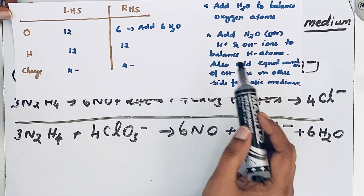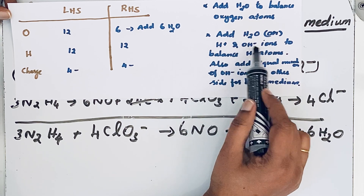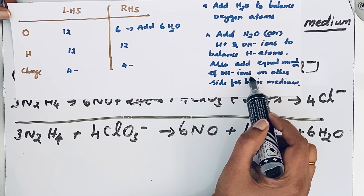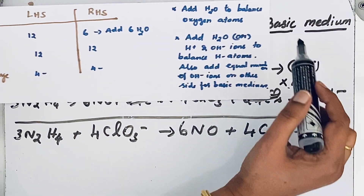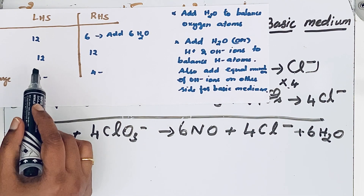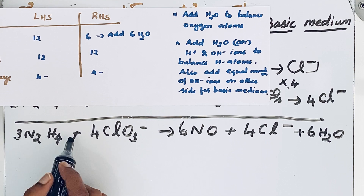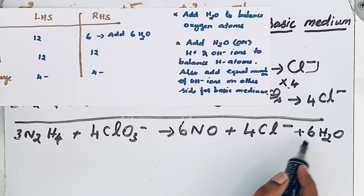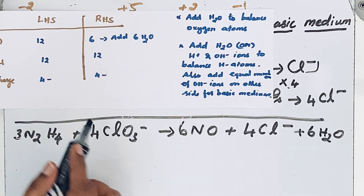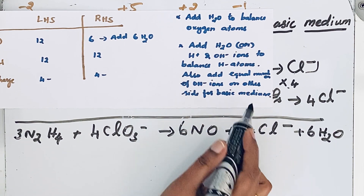Now balance the hydrogen atoms. To balance hydrogen atoms, add H2O or H plus and OH minus ions, and add equal numbers of OH minus ions on the other side for basic medium. On the left hand side: 3×4 = 12 hydrogen atoms. On the right hand side: 6×2 = 12 hydrogen atoms from the 6 H2O molecules. So the hydrogen atoms are automatically balanced, and we do not need to add any OH minus ions.